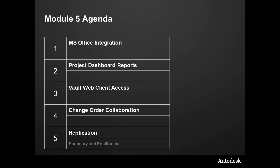And it doesn't have to be just inside of one office — we can scale this up and talk about collaboration. Coming up, we'll take a look at Microsoft Office and Outlook integration, the ability to run a dashboard report for a quick status check on a project, the Vault web client access out of the box, change order collaboration for non-CAD users, and finally replication.